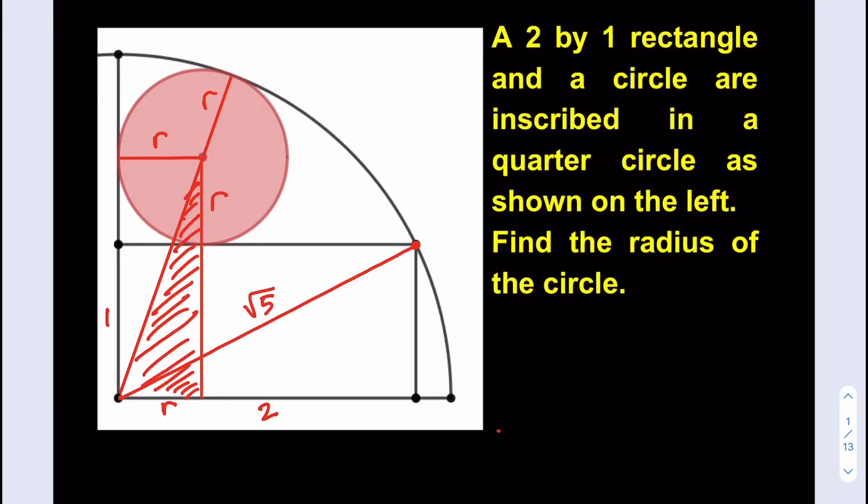Let's go ahead and do that. Now, if I call this point O and this point A, and let's say this is B, we know that OB is equal to... actually, that's not 1. Never mind. OB is equal to root 5, because the radius, as you know from here, is root 5. So OA is going to be root 5 minus R. Correct? Because we have to subtract the R there.